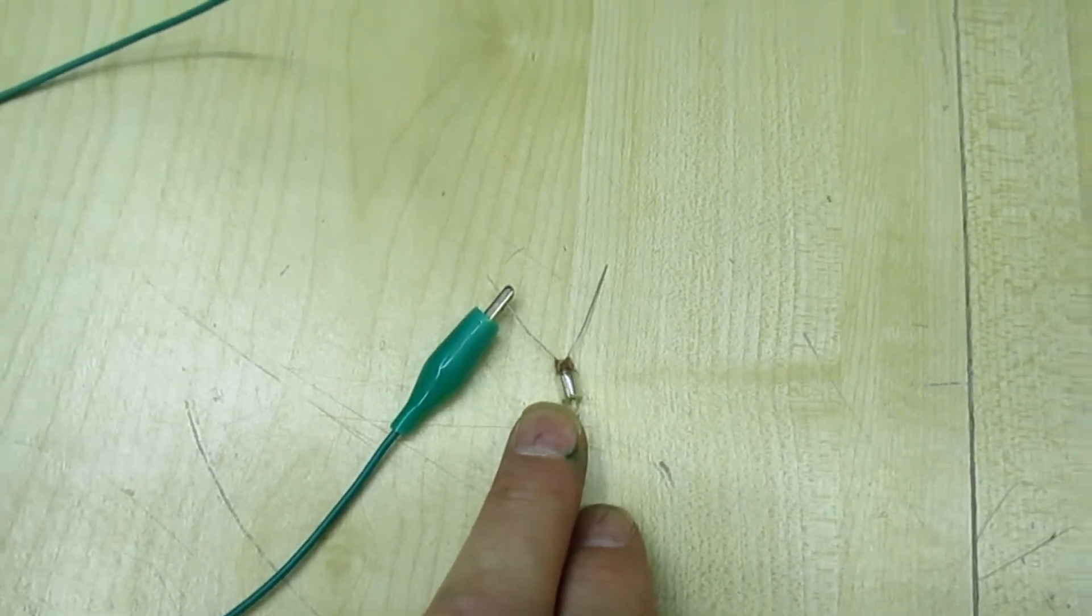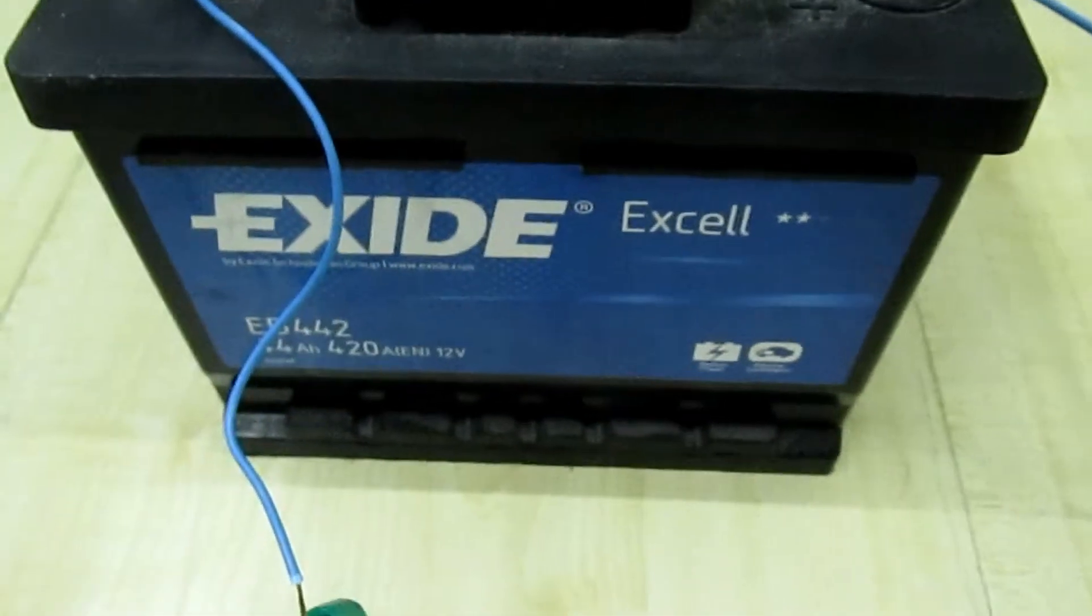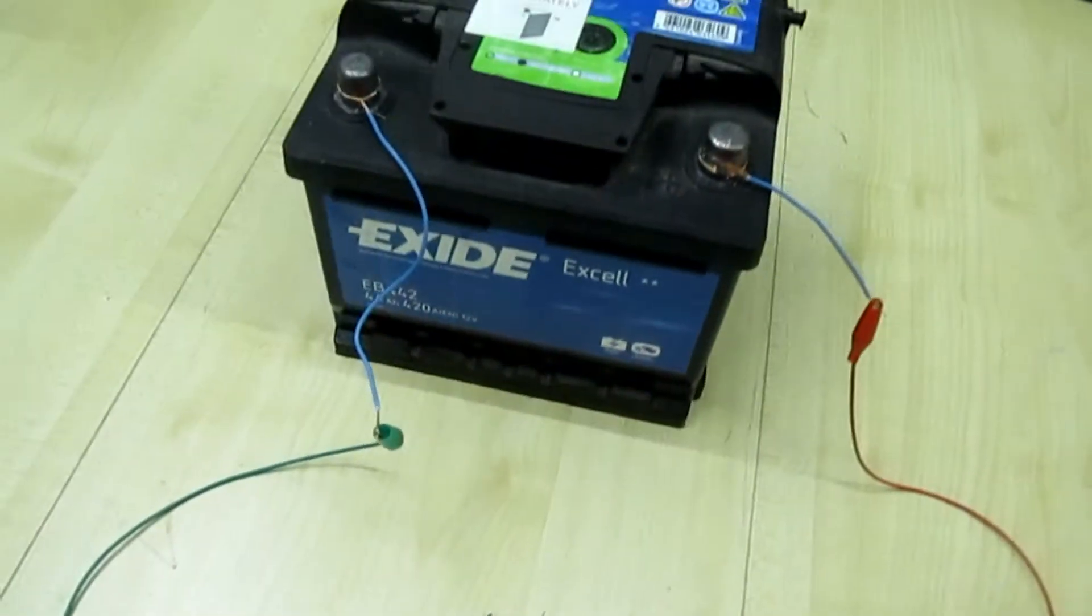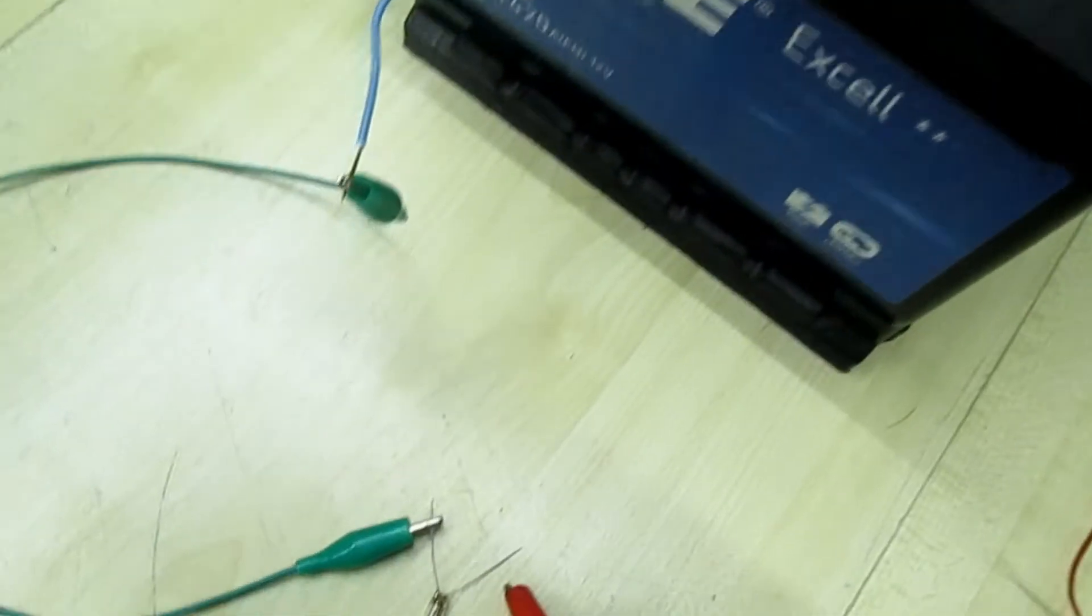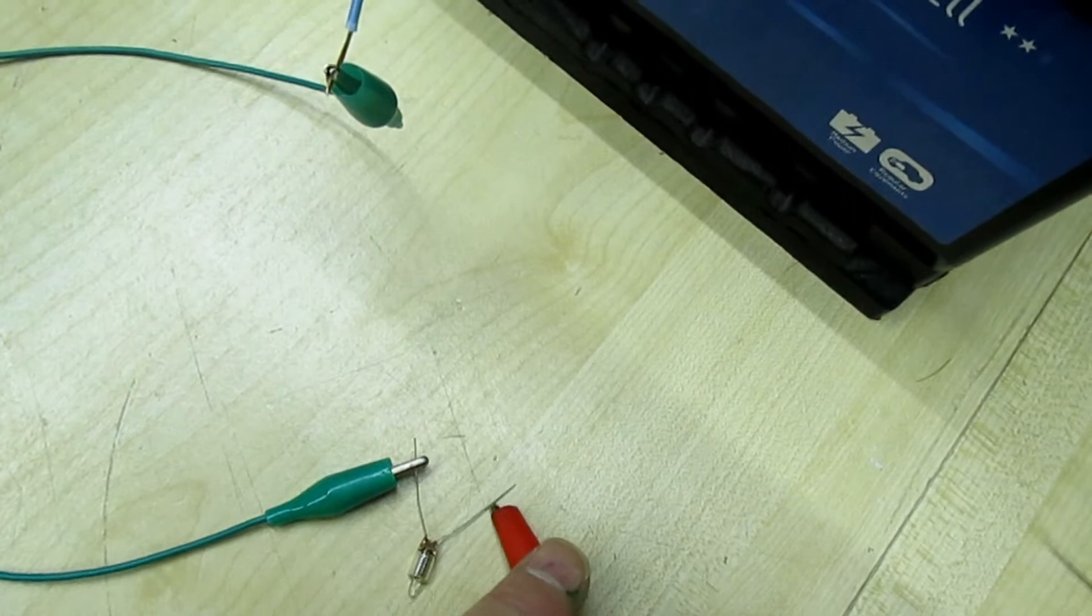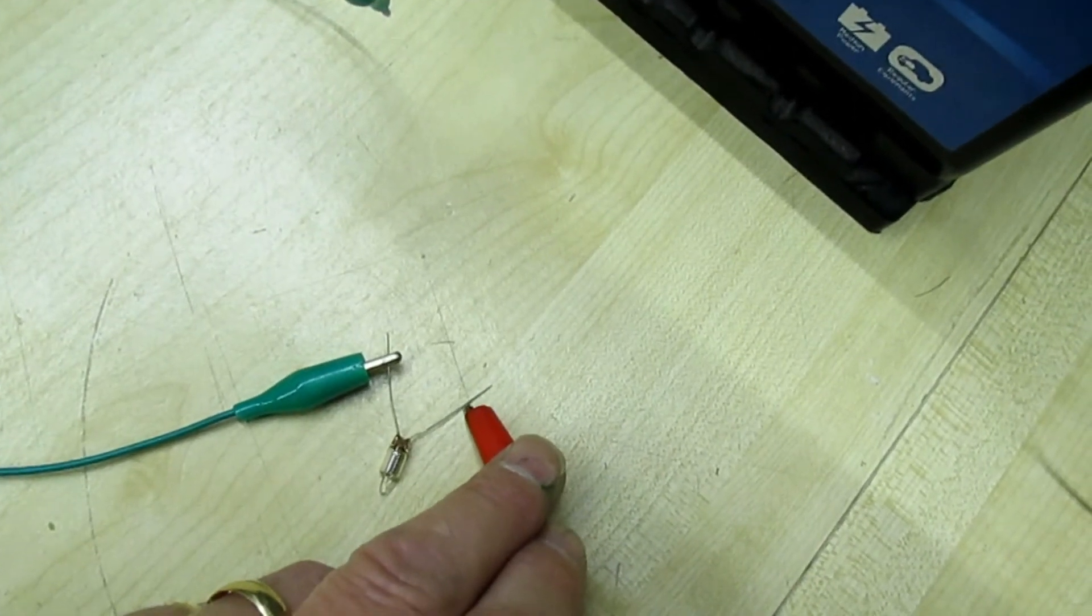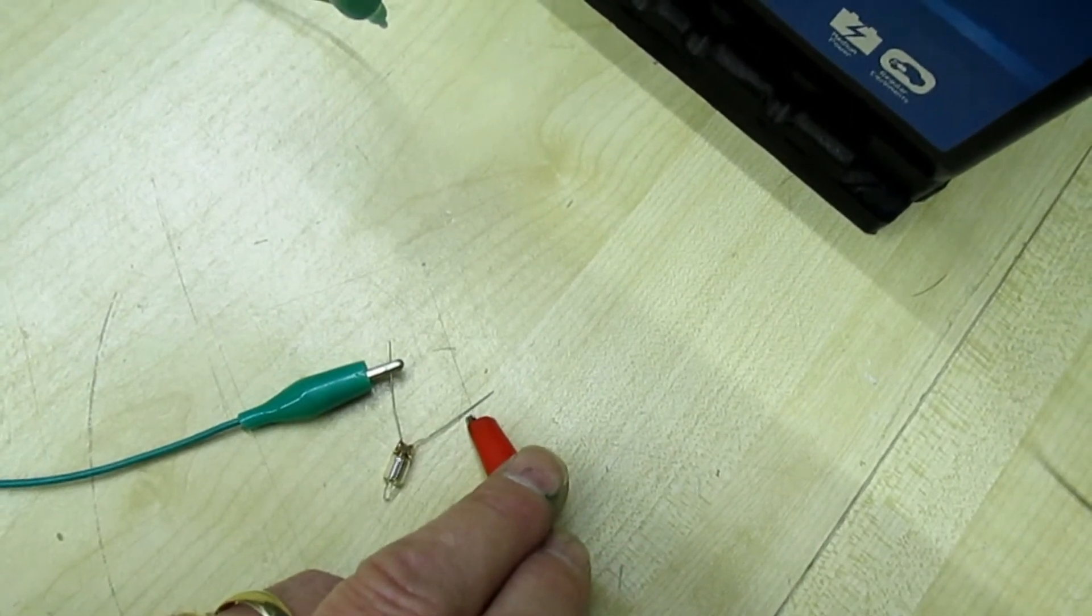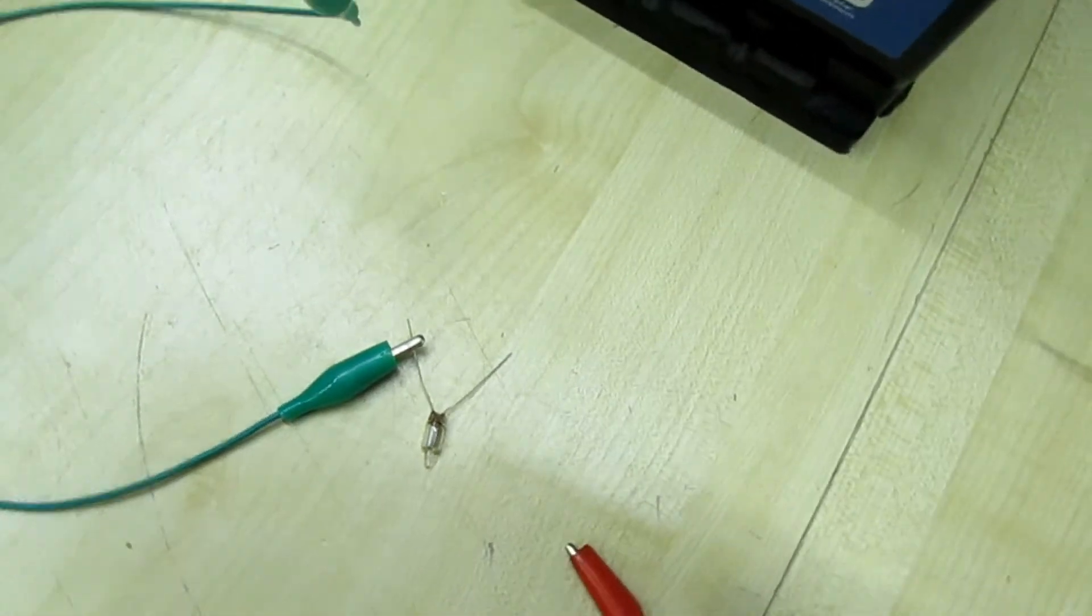Now here we have a 90 volt neon bulb, and just to show you that's a 12 volt car battery there. So we connect to the neon bulb and nothing at all happens because the neon obviously doesn't strike or doesn't light up until these 90 volts are across it.